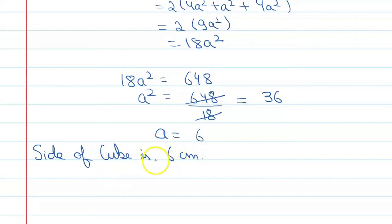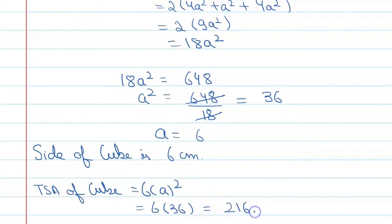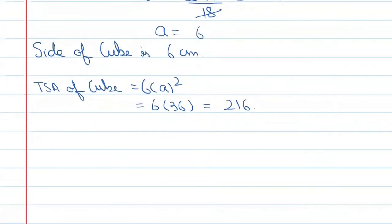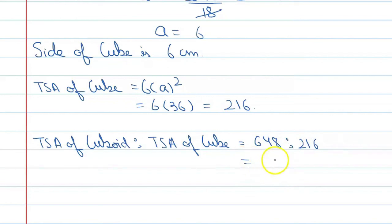Now we need to find the ratio of total surface area of the cuboid to total surface area of the cube. Total surface area of cube = 6a² = 6 × 36 = 216 cm². So the ratio of total surface area of cuboid to total surface area of cube = 648 : 216 = 3 : 2.